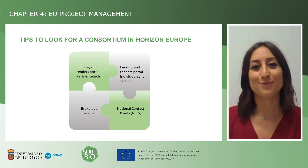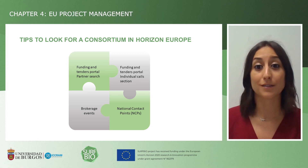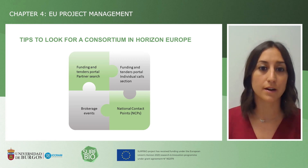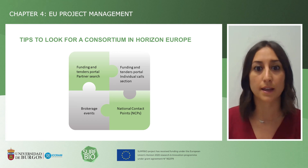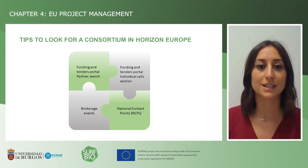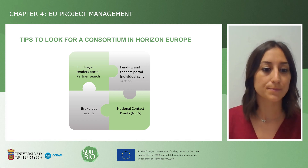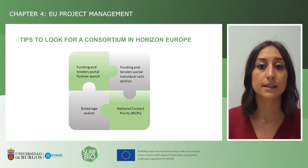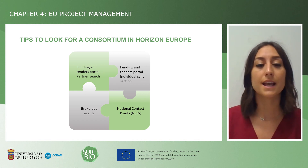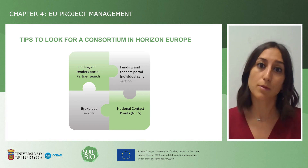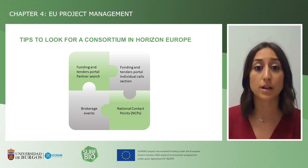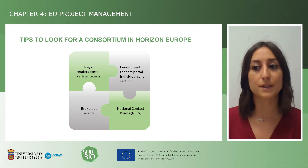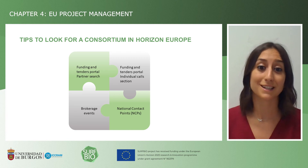Once you have identified the call and want to build a consortium, you have different options. Through the Funding and Tenders portal there are two options: one is through the partner search, and the other is through the individual call section. Another option, which I think is very interesting, is brokerage events — events organized through B2Match, where people interested in the same call can come together and have individual meetings to discuss ideas for the proposal, hopefully helping to build a consortium and write a successful proposal.